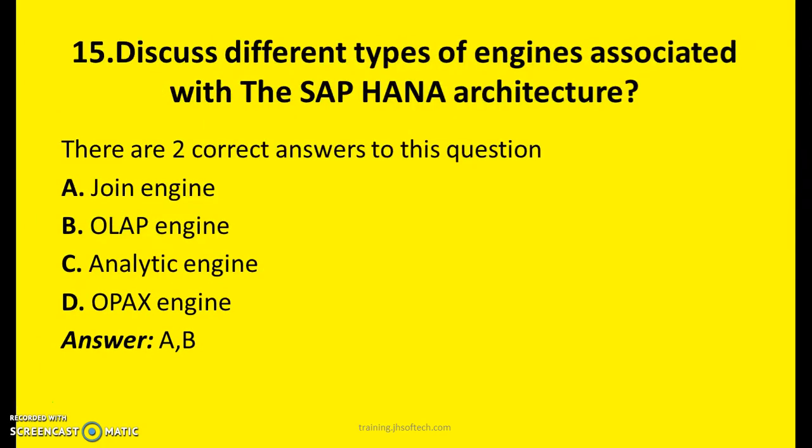Question Fifteen: Discuss different types of engines associated with the SAP HANA architecture. There are two right answers. A: Join engine. B: Overlap engine. C: Analytical engine. D: OLAP engine. The answers are A and B — Join engine and Overlap engine.